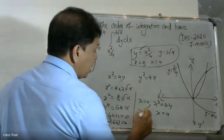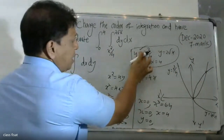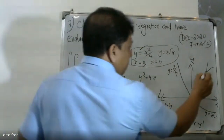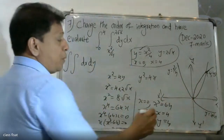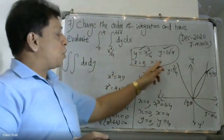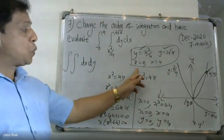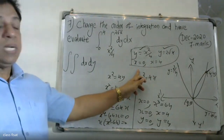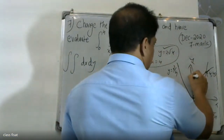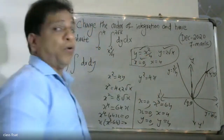When x = 0, y = 0. When x = 4, y = 4. So the intersection points are (0, 0) and (4, 4). The x-values are 0 and 4.